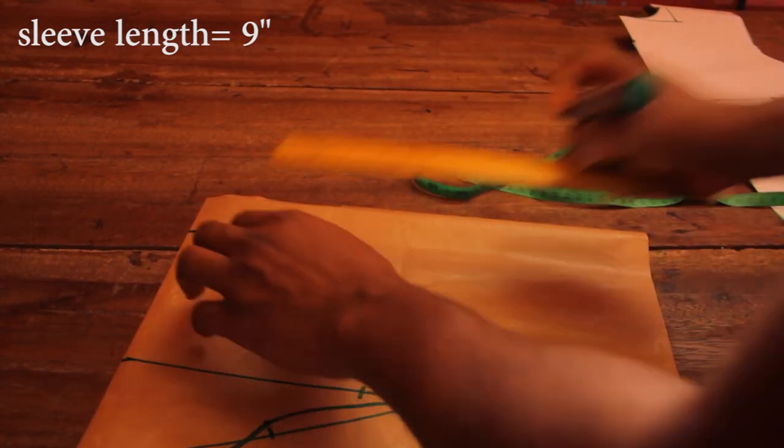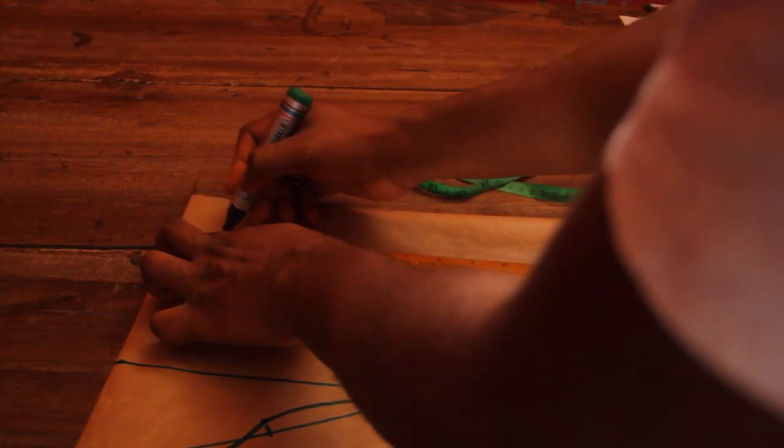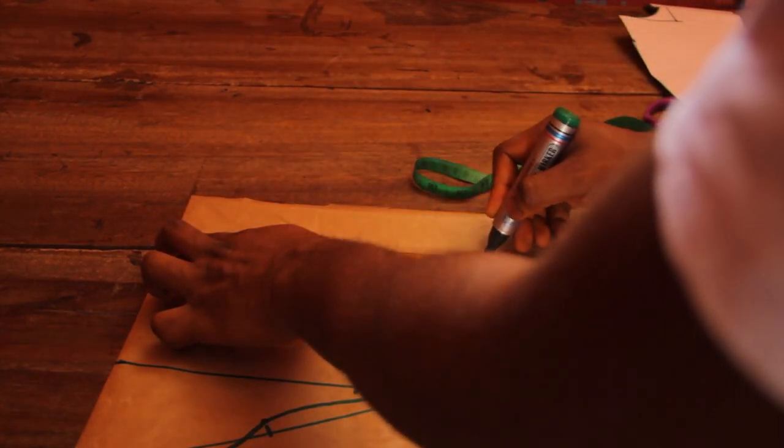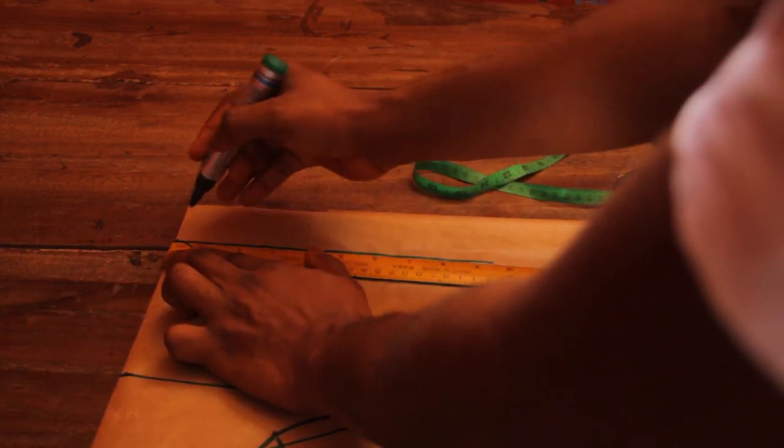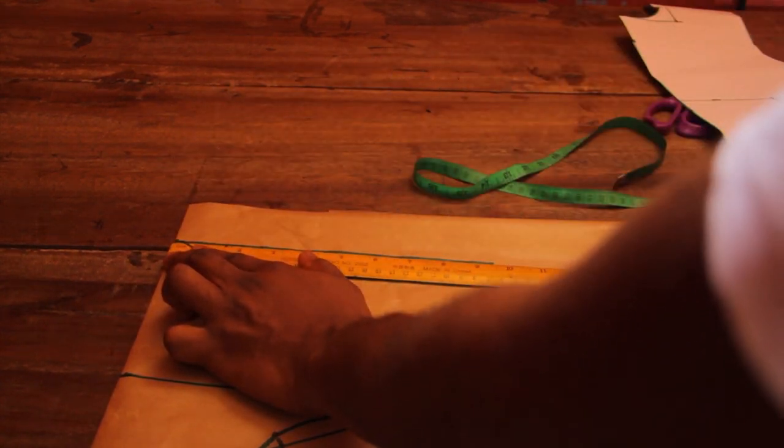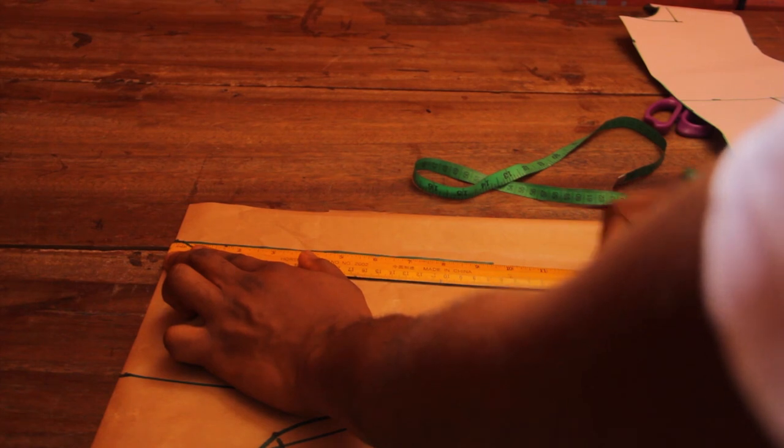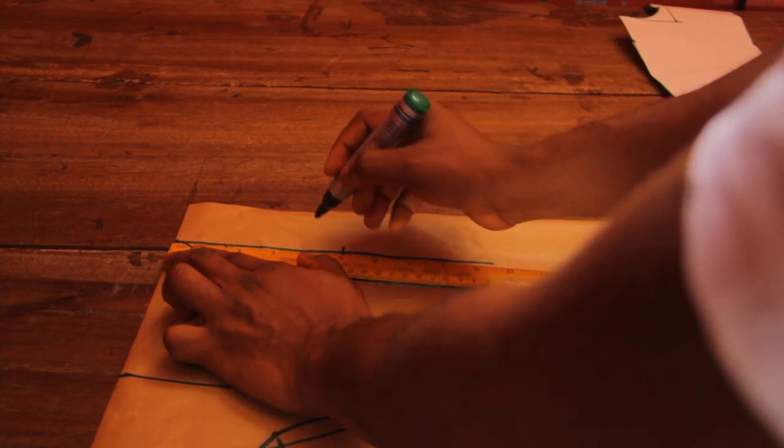The next thing I'm going to do is to mark my sleeve length. I'm going to rule a straight line from top to bottom. Now since this is a short sleeve, if a person doesn't have very large arms, I like to taper out the sleeve.